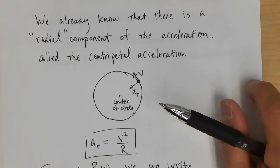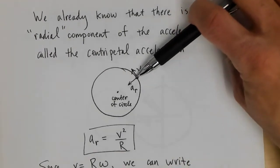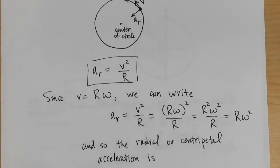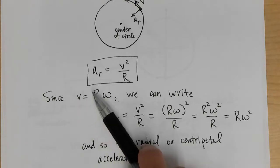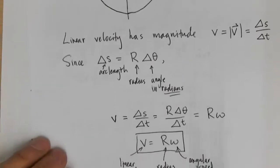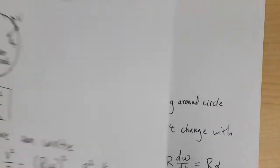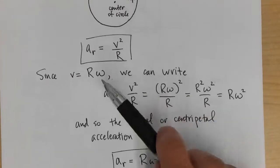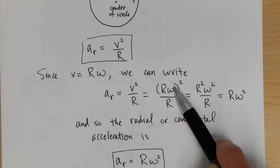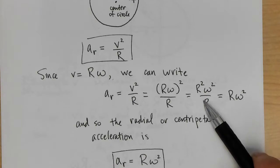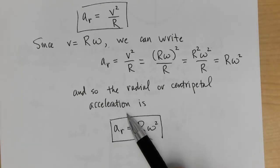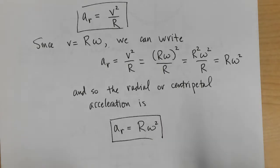The radial (centripetal) acceleration AR = V²/R. Since V = Rω, we can substitute to get AR = R²ω²/R = Rω². So the centripetal acceleration can also be written as R times omega squared.